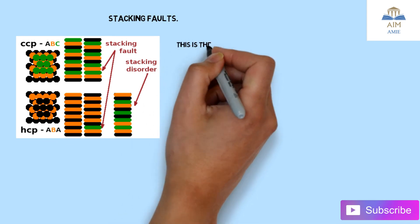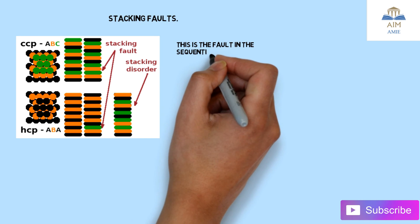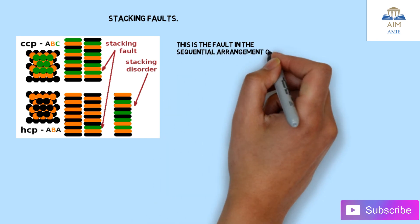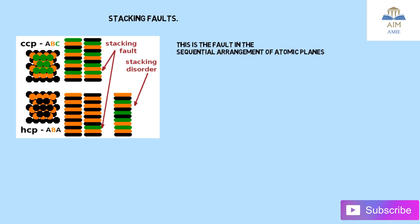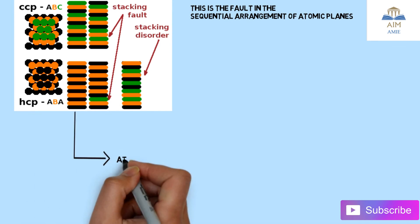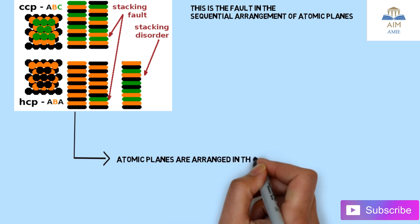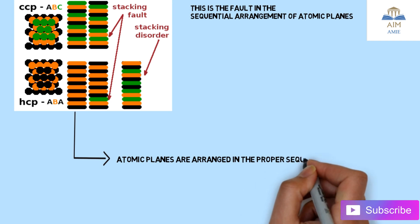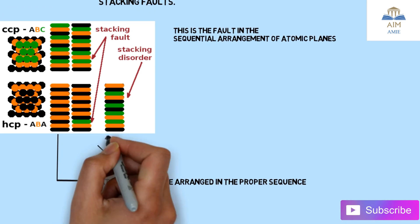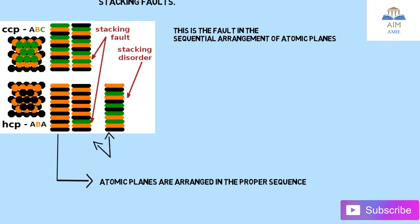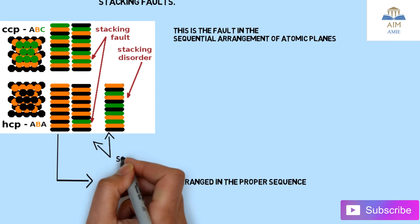The last type is stacking faults. Stacking means arranging, so a fault in the arrangement is known as a stacking fault — it is a fault in the sequential arrangement of atomic planes, where 'atomic planes' is the key term. In this image, you can see the atomic planes that are perfectly stacked in the proper sequence, and these two highlighted regions are the stacking faults.